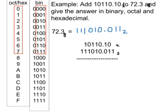Now adding the two binary numbers — and if you have any difficulty with this, go back and look at the binary addition video. What we get is: 1 plus 0 is 1, 1 plus 0 is 1, 0 plus 1 is 1. Put in the fractional point. 0 plus 0 is 0; 1 plus 1 is 2, put down 0 carry 1; 1 plus 1 is 2, put down 0 carry 1; 1 plus 1 is 2, put down 0 carry 1; 1 plus 1 plus 1 is 3, put down 1 carry 1; 1 plus 1 is 2, put down 0 carry 1. So that's the answer in base 2.